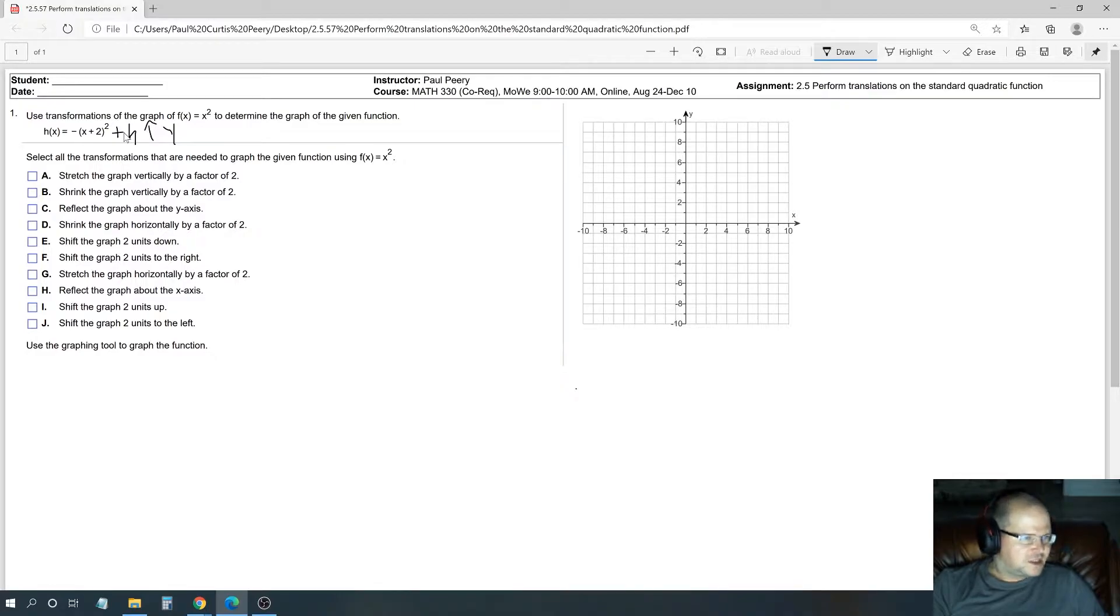If it was plus, for instance, 2 there, it would go 2 up. If it was negative 3, it would go 3 down. So this has to do with going up and down. Now, whatever's influencing the x right here within the parenthesis, that is going to have the opposite looking effect. So since there's a positive 2 there, you might think it's going to go 2 to the right. But actually, what that means is it's going to go 2 to the left.